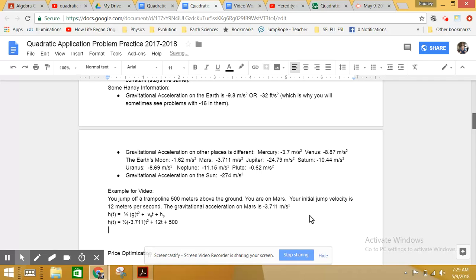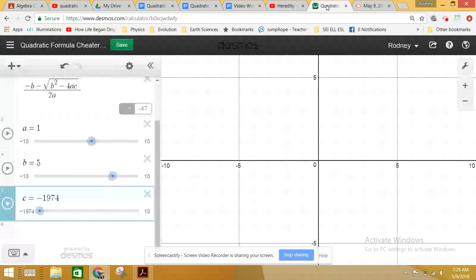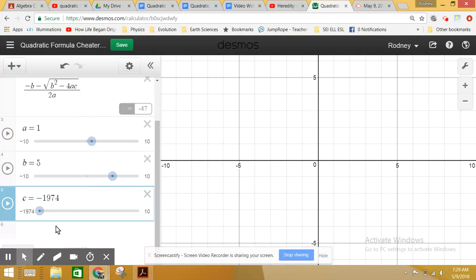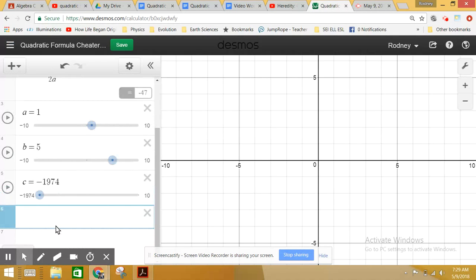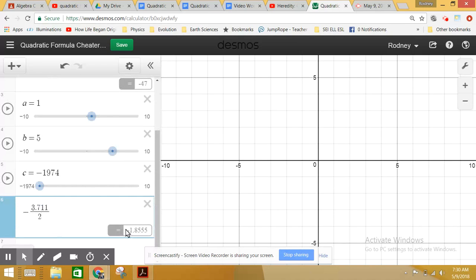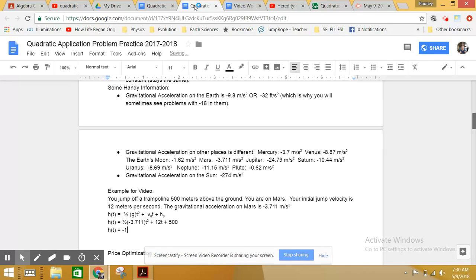And let's simplify this a bit. H in terms of T equals, well, we're going to get half of negative 3.711. I'm going to cheat real quickly with the calculator. I'll say negative 3.711 divided by two. It's going to get me negative 1.8555. Negative 1.8555 T squared plus 12 T plus 500.